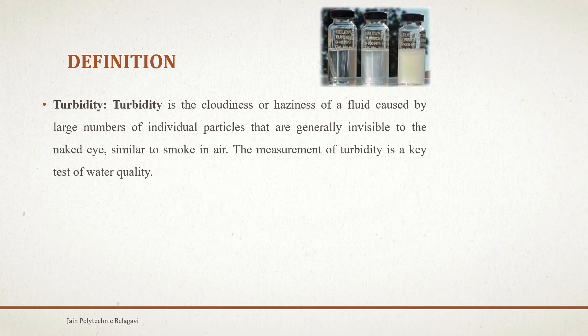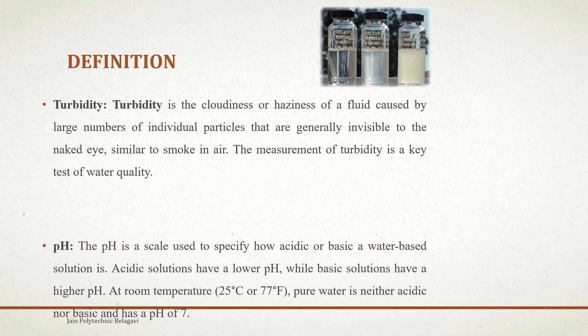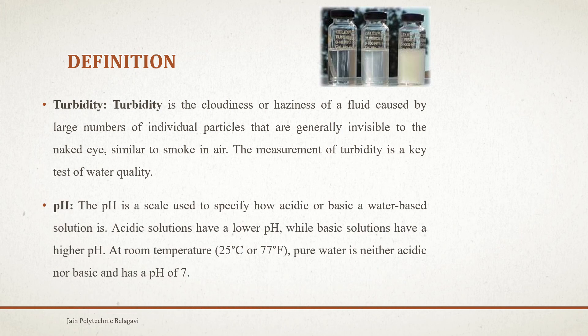We measure this turbidity by passing sunlight through the samples. Next, we will be discussing pH — the concentration of hydrogen ions. The pH is a scale used to specify how acidic or basic a water-based solution is.